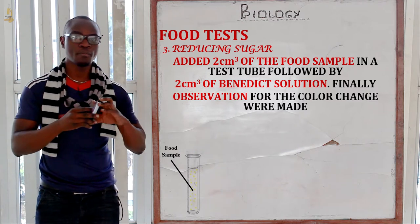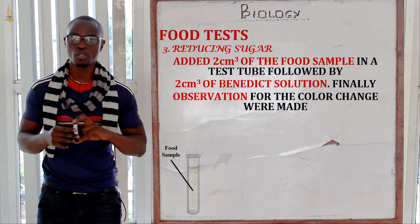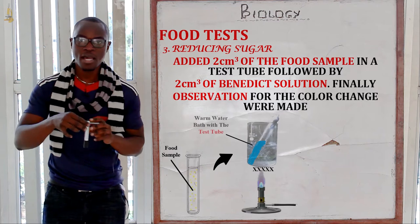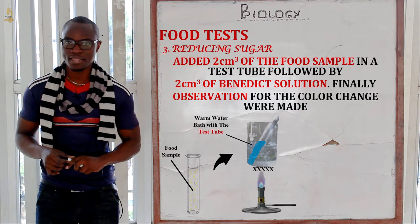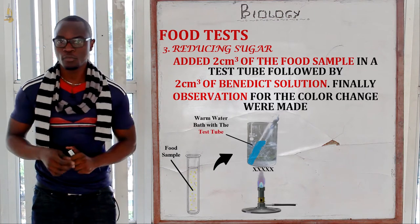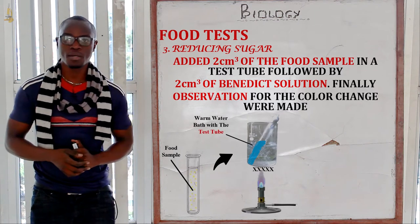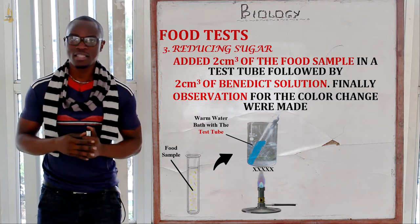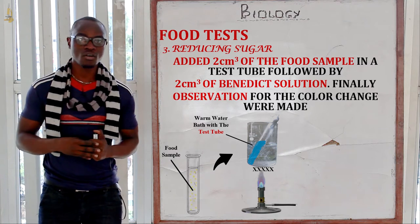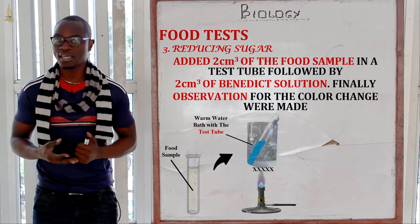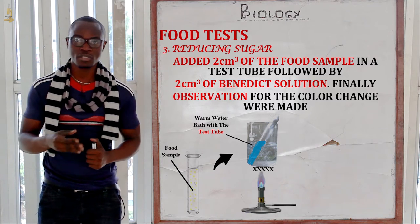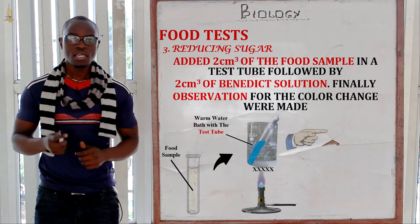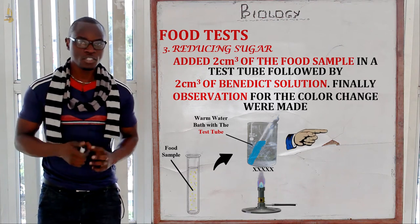Then you will add about two centimetres cubed of Benedict's solution, which is blue in colour. After adding the blue Benedict's solution, take the test tube and place it in a warm water bath. This is to accelerate the chemical reaction that will take place.